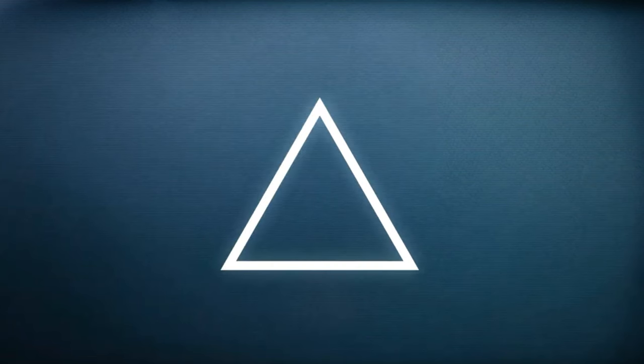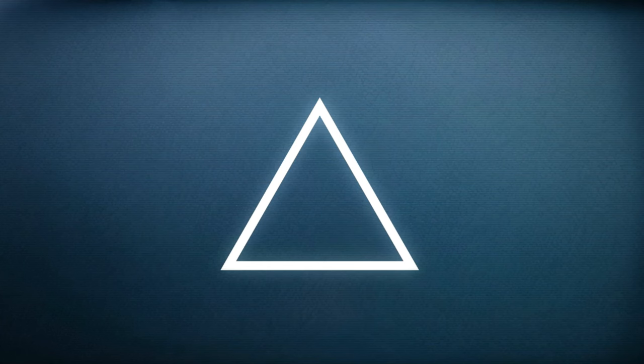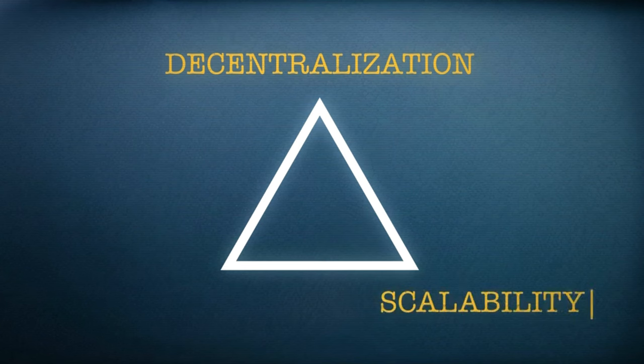Over the past 13 years, a trilemma of blockchain characteristics has formed. An ideal blockchain network should be widely decentralized, infinitely scalable and impenetrably secure, but achieving all three at once is difficult.